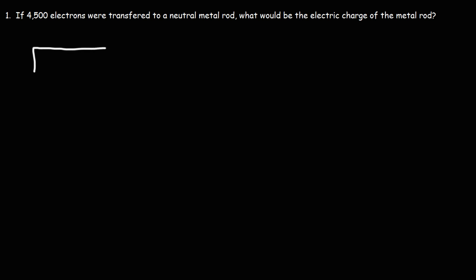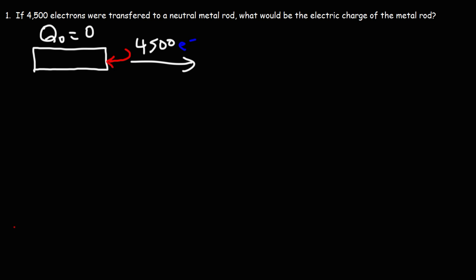Let's draw a picture. This is the metal rod. Originally it's neutral, so its initial charge is zero. But then 4,500 electrons are going to be transferred to this metal rod. Once that happens, it's going to acquire a negative charge. We need to calculate what that new charge is going to be.